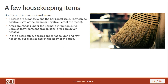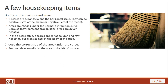In the z-score table, z-scores appear as column and row headings, while areas appear in the body of the table. Make sure you choose the correct side of the area under the curve — left or right. Z-score tables usually list the area to the left of the z-score, so if you need the area to the right, subtract the table value from one. When using StatCrunch, remember to select the correct inequality sign from the drop-down menu.